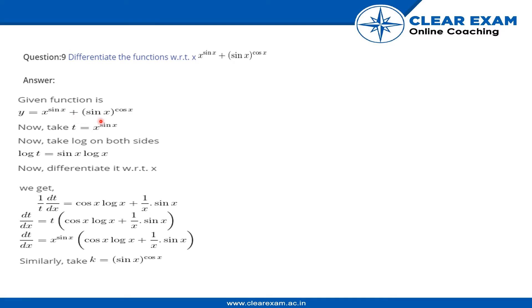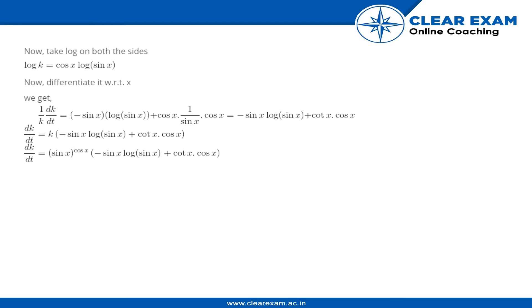Similarly, take the second term k equals sine x to the power cos x. Take natural logarithm on both sides: log k equals cos x into log sine x. Differentiating with respect to x on both sides, we get 1 by k dk by dx equals minus sine x log of sine x plus cos x into 1 by sine x into cos x.